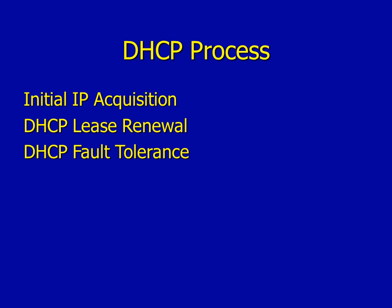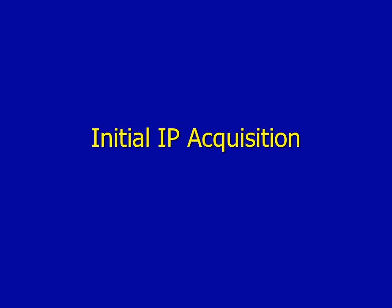Today we're going to look at the DHCP process. We're going to consider the initial IP acquisition, where the DHCP client has just come onto the network looking for an IP address. Then we'll consider what happens after it's already got an IP address and needs to renew its lease. We'll also look at what happens when you've got multiple DHCP servers and one of those servers goes down.